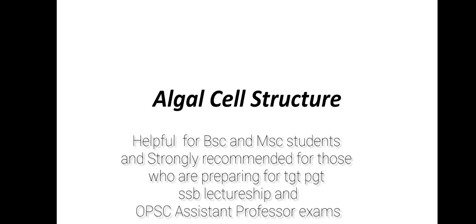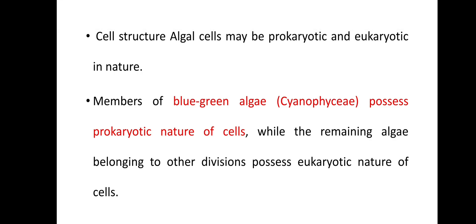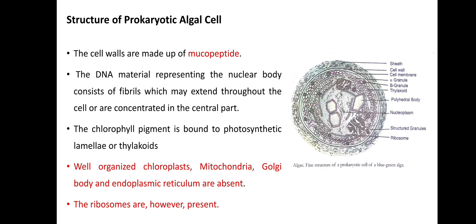Today I will discuss about the algal cell structures. Algal cells may be prokaryotic in nature or eukaryotic in nature. Generally, the members of blue-green algae possess prokaryotic cells, while the remaining algae possess eukaryotic cells. So let us discuss the details about the structure of prokaryotic cells.